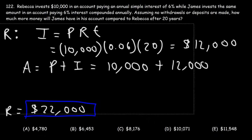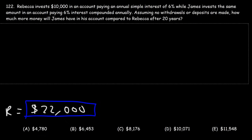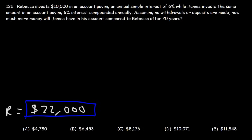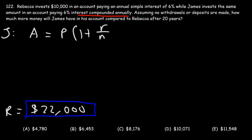Now let's do the same for James. James is not receiving simple interest; rather, the interest he's receiving is compounded. So we're going to see the effect of compound interest versus simple interest. The amount that James is going to receive is based on this formula: P times 1 plus R divided by N, raised to the NT.